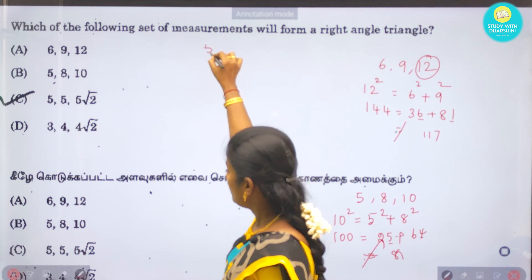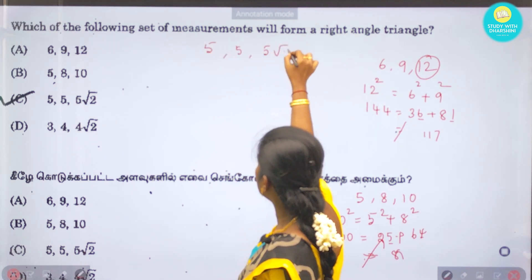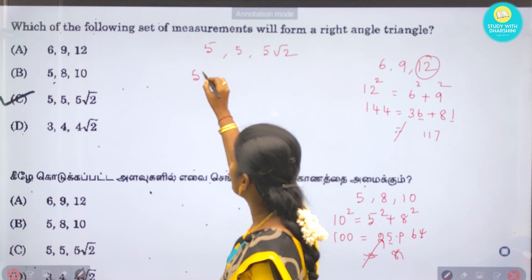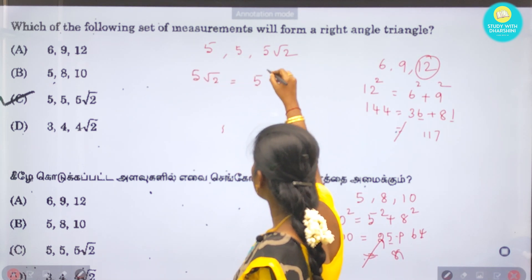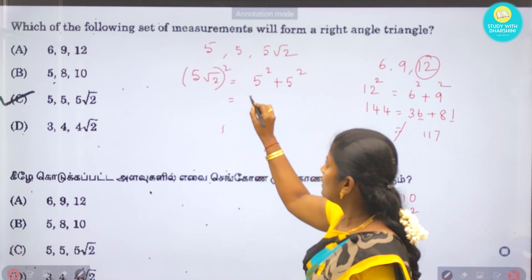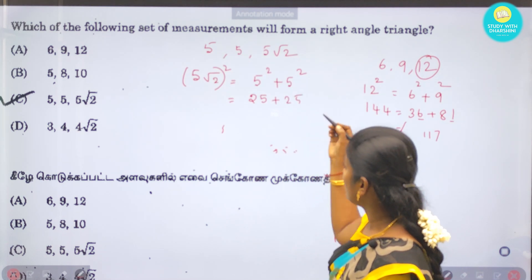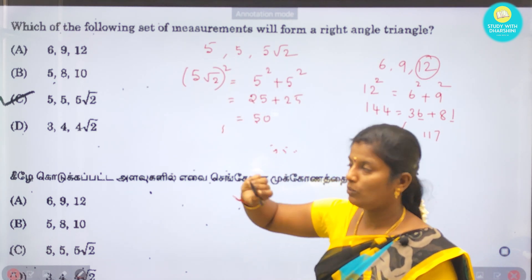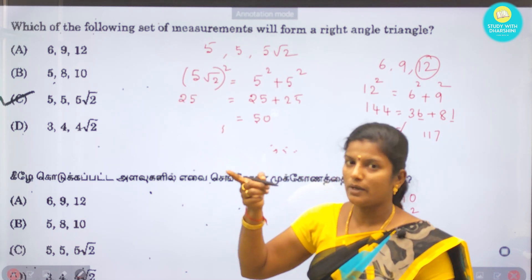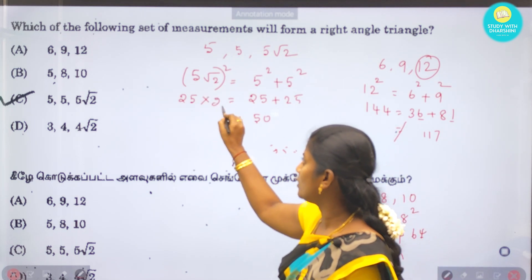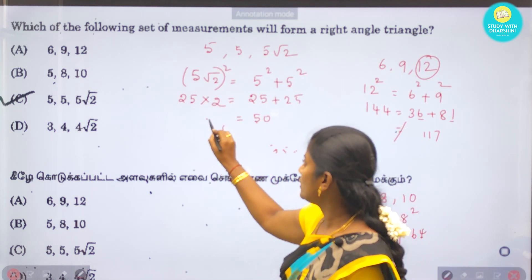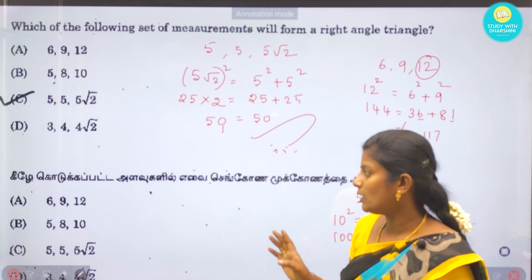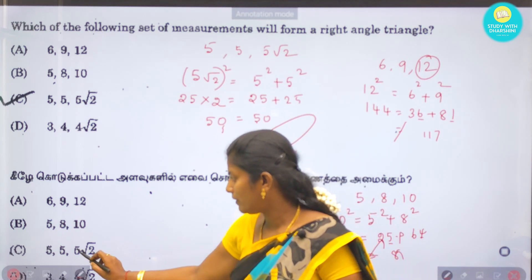Checking option (5, 5, 5√2): 5² + 5² = 25 + 25 = 50. For the hypotenuse: (5√2)² = 25×2 = 50. The left-hand side equals the right-hand side, so these numbers satisfy Pythagoras theorem. Therefore option C, (5, 5, 5√2), is the answer.